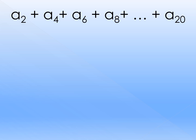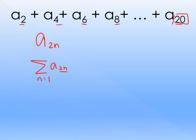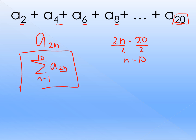How about this series: a sub 2, a sub 4, a sub 6, a sub 8, up to a sub 20? All subscripts are divisible by 2, so the defined sequence is a sub 2n. To find the upper bound, we set 2n equals 20, giving n equals 10. So a sub 20 is the 10th term. The sigma notation representation is summation of a sub 2n where n starts from 1 up to 10.